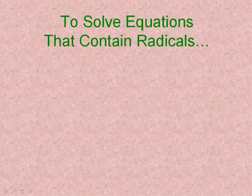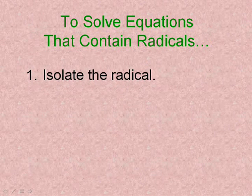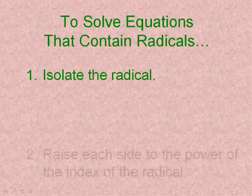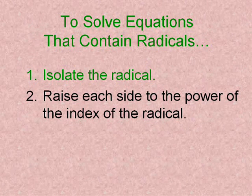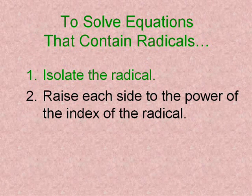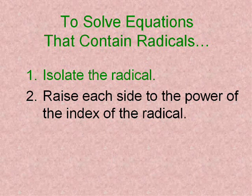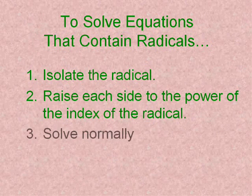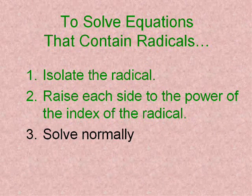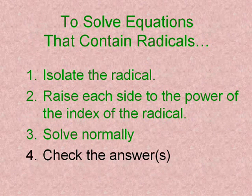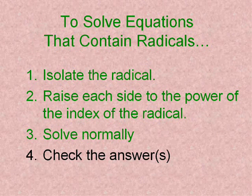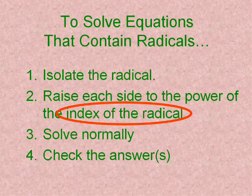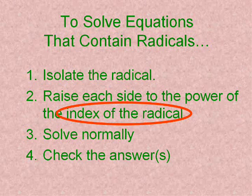Let me review the steps again because they are a little tricky. We start by isolating the radical. And note that we don't always square each side — what we always do is raise each side to the power of the index of the radical. Then we solve normally, then we check the answer.